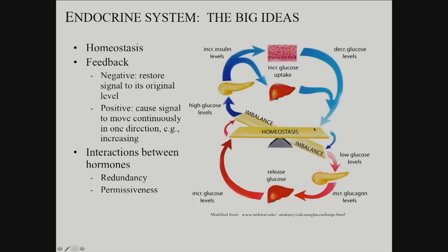Insulin acts on tissues to increase glucose uptake from the blood, decreasing blood glucose back toward the correct range. If there's an overshoot or a fasting situation where blood glucose drops, the pancreas detects that too. A separate hormone, glucagon, triggers the liver to release glucose and carry out metabolic steps to liberate glucose from its stored polymer form, glycogen, elevating glucose back to homeostatic levels. Blood glucose is tightly regulated — if too high, osmotic problems arise; if too low, tissues lack energy, potentially leading to somnolence, coma, seizure, and death.